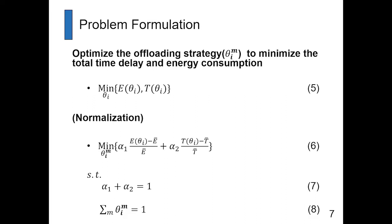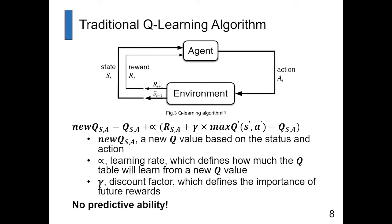Let's talk about the traditional Q-learning algorithm, because we want to use it to let the SMD select the best way to offload. In Figure 3, the Q-learning algorithm has two important parts: agent and environment. The agent uses state and reward to compute an action; the environment uses that action to generate a new state and new reward, which the agent then uses to compute a new action.